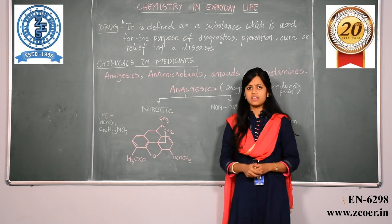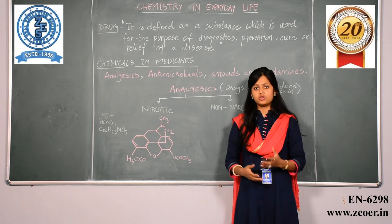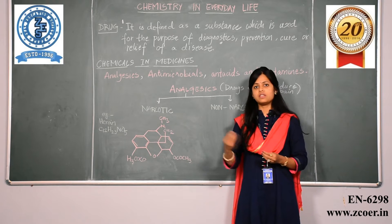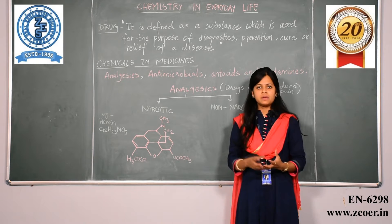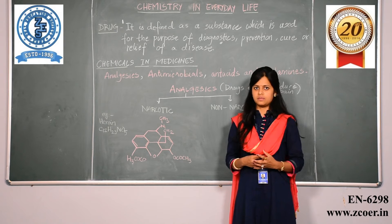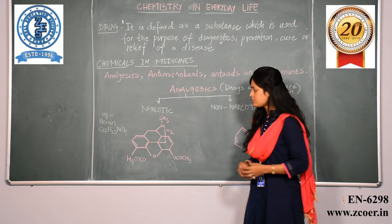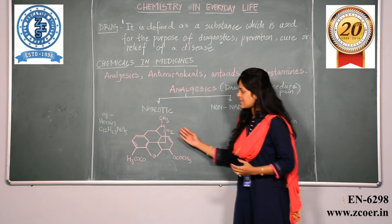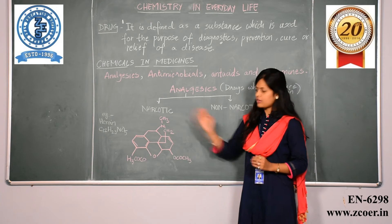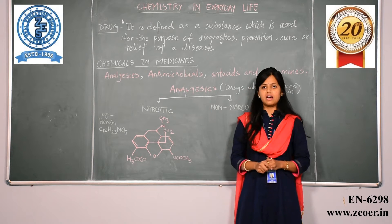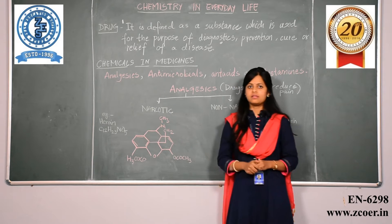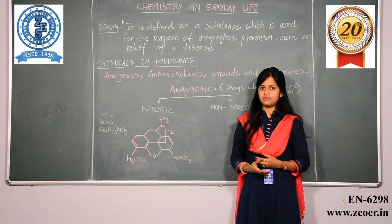Narcotic type of analgesics are those which relieve us from pain by depressing our nervous system. Examples of these narcotic analgesics are heroin, morphine, etc.